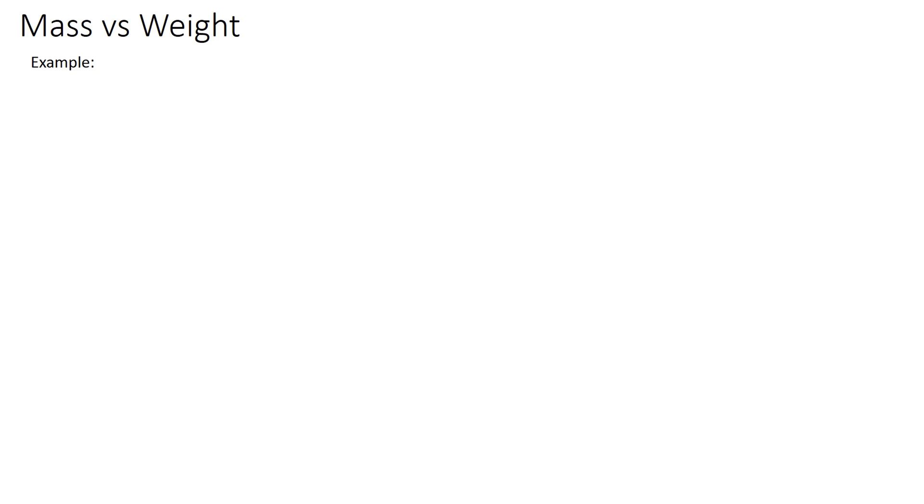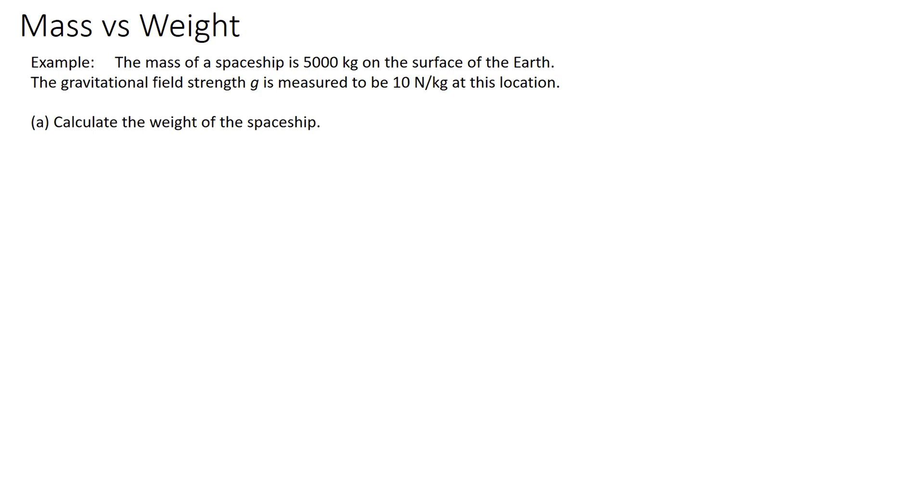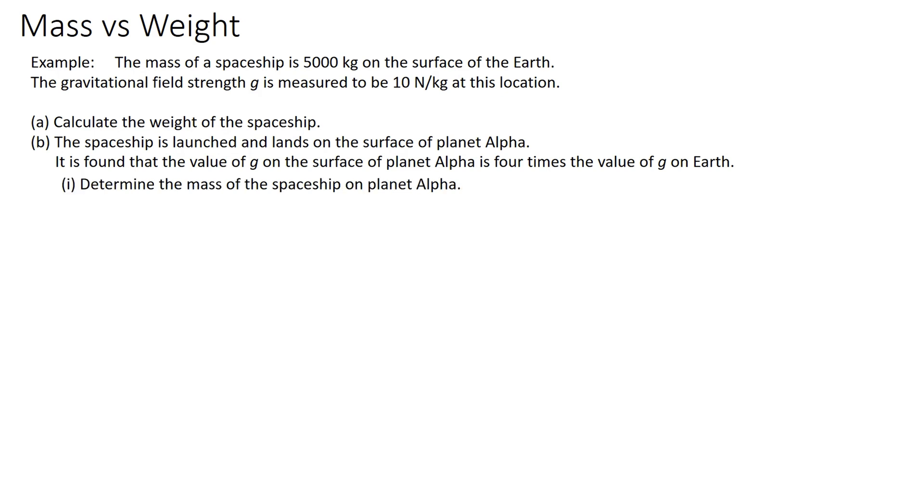Let's look at this example. The mass of a spaceship is 5000 kilograms on the surface of the Earth. The gravitational field strength g is measured to be 10 Newton per kg at this location. (a) Calculate the weight of the spaceship. (b) The spaceship is launched and lands on the surface of planet alpha. It is found that the value of g on the surface of planet alpha is 4 times the value of g on Earth. (i) Determine the mass of the spaceship on planet alpha. (ii) Determine the weight of the spaceship on planet alpha. You can pause the video and try to answer the question yourself.